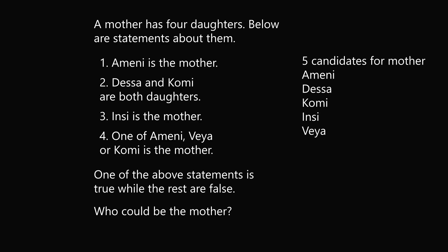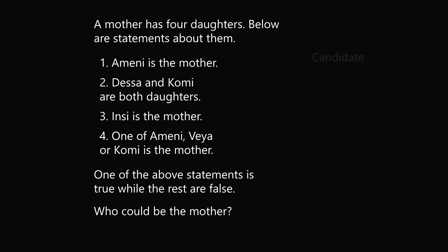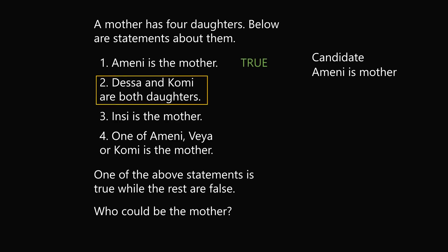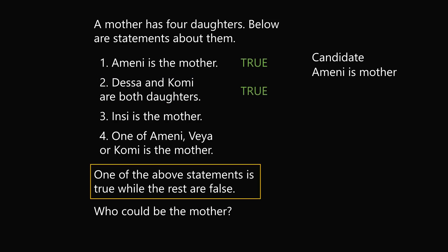There are five names in the problem: A-meni, Dessa, Komi, Insi, or Veya. So let's go through each possibility. Suppose that A-meni is the mother. Statement 1 would have to be true. Then statement 2 would also have to be true, because if A-meni is the mother, then everyone else has to be a daughter, so Dessa and Komi are both daughters. But we know that only one statement can be true and the rest have to be false. So we've derived a contradiction — it is not possible for A-meni to be the mother, because then statements 1 and 2 would both have to be true.